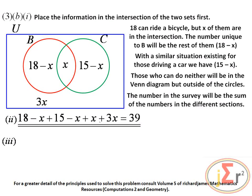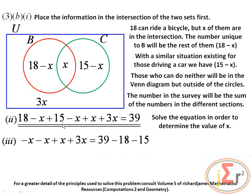The total number in the survey is the sum of all numbers in the different sections, equal to 39. To find X, we solve the equation. Separating unknowns from knowns, all X terms go on the left and pure numbers on the right. Transposing, we get 2X equals 6. Dividing by 2, X equals 3.